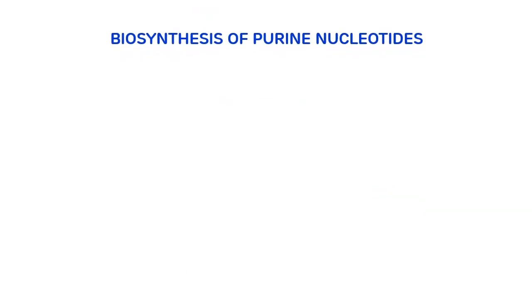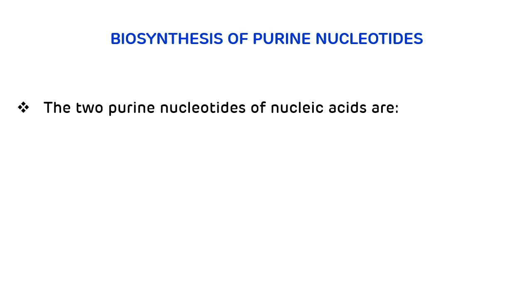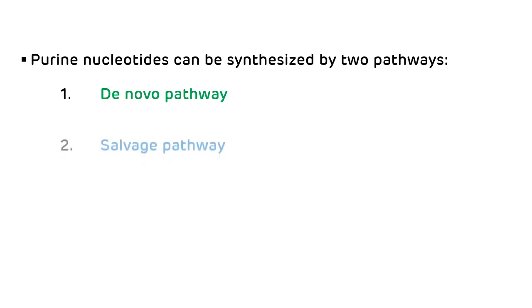Now, biosynthesis of purine nucleotides. Almost all living organisms can synthesize purine nucleotides. The two important purine nucleotides for nucleic acid synthesis are adenosine monophosphate (AMP) and guanosine monophosphate (GMP). These purine nucleotides can be synthesized by two pathways: first is the de novo synthesis pathway, which is the new synthesis using various amphibolic intermediates, and second is the salvage pathway.